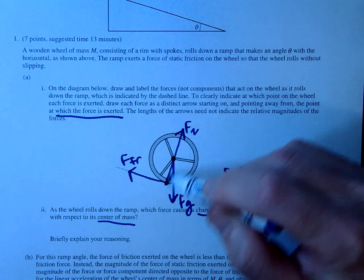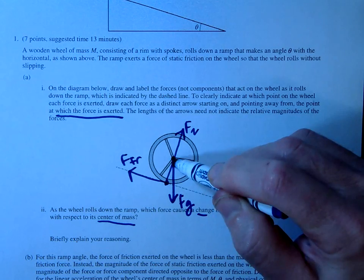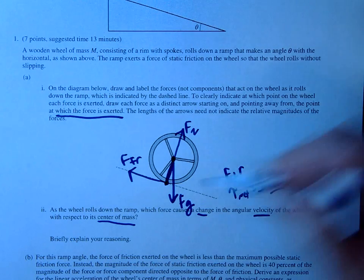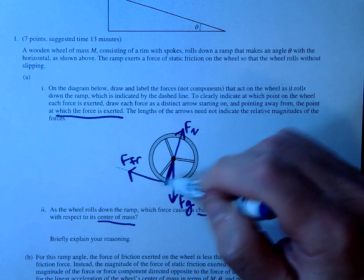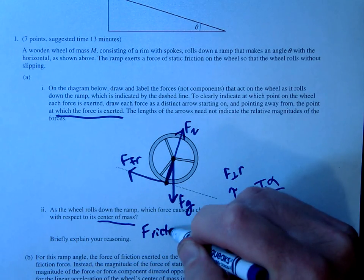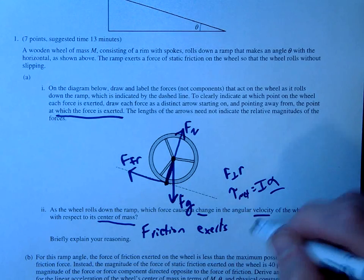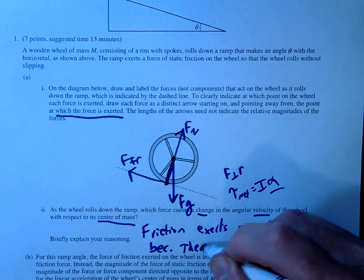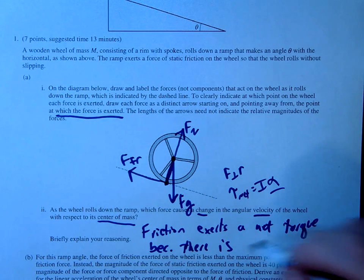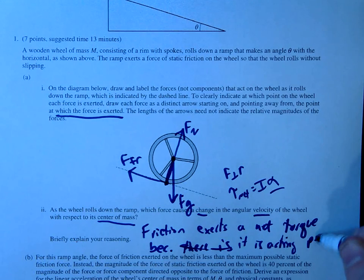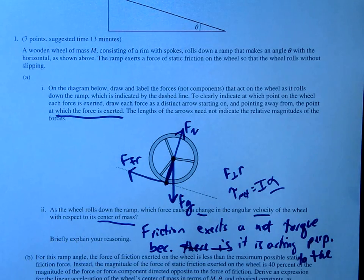The normal force, notice that this is going parallel to our center of mass or the radius I guess of the center of mass. So this would be also zero. So there's no net torque due to the normal force. Friction on the other hand is clearly perpendicular and you only need one component but this would be 100% perpendicular. So yep, we're going to go with friction. So friction exerts a net torque because there is or it is acting perpendicular to the axis of rotation, the center of mass.